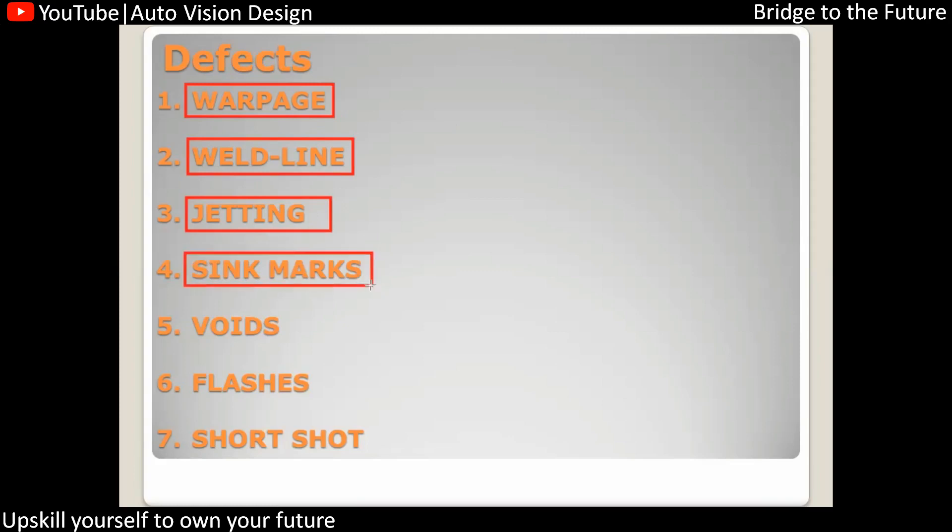Sink mark occurs when the B-side features or B-side root thickness is more than 40 to 60 percent of the wall thickness. In that case, there will be a depression on the class-A surface, and that is called a sink mark.